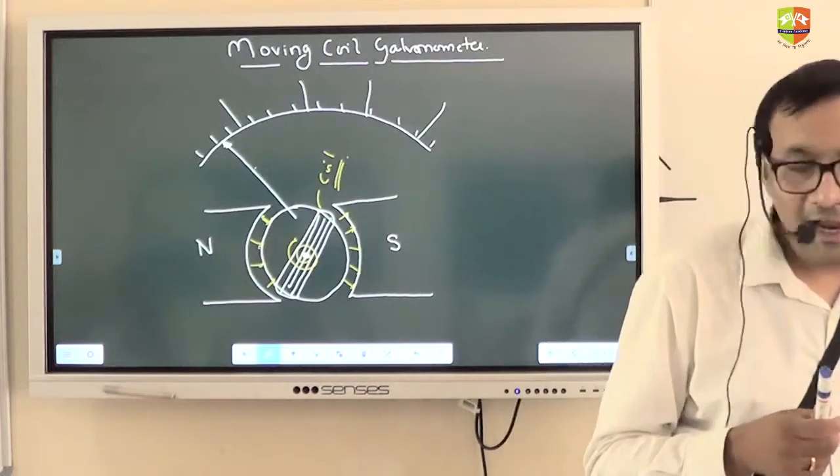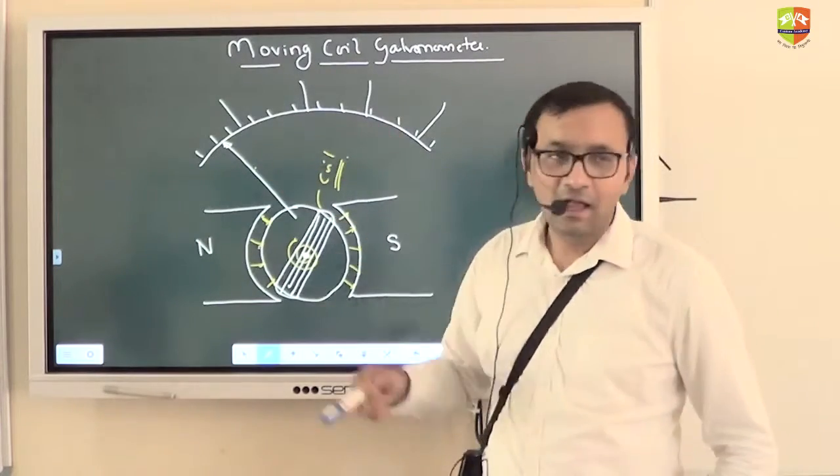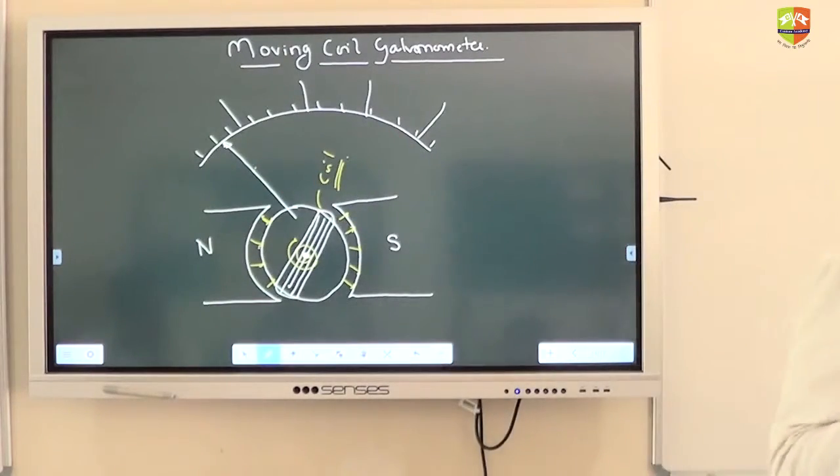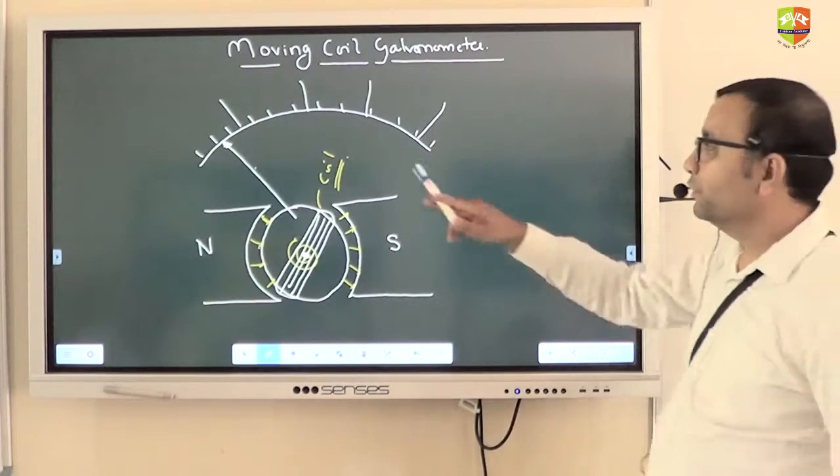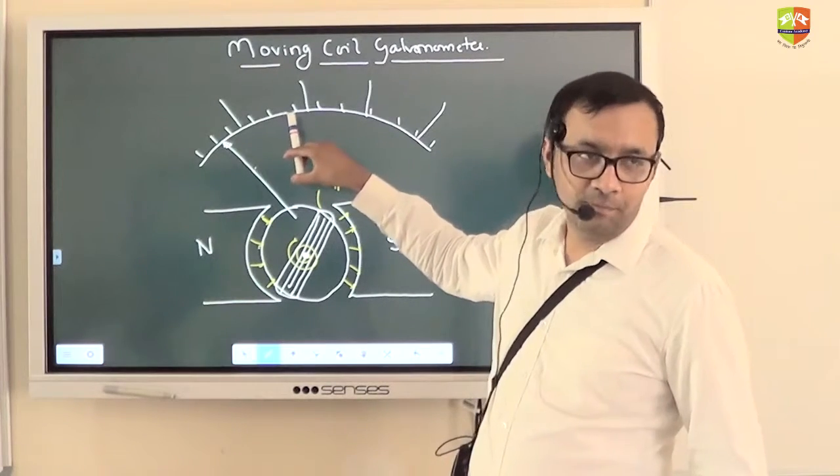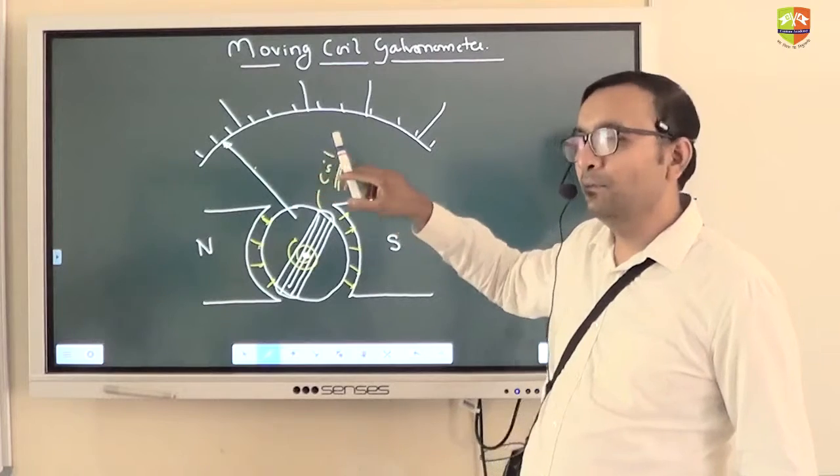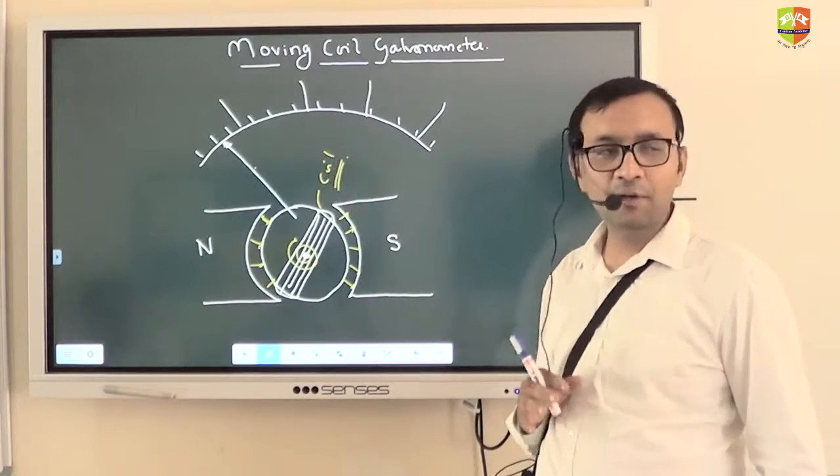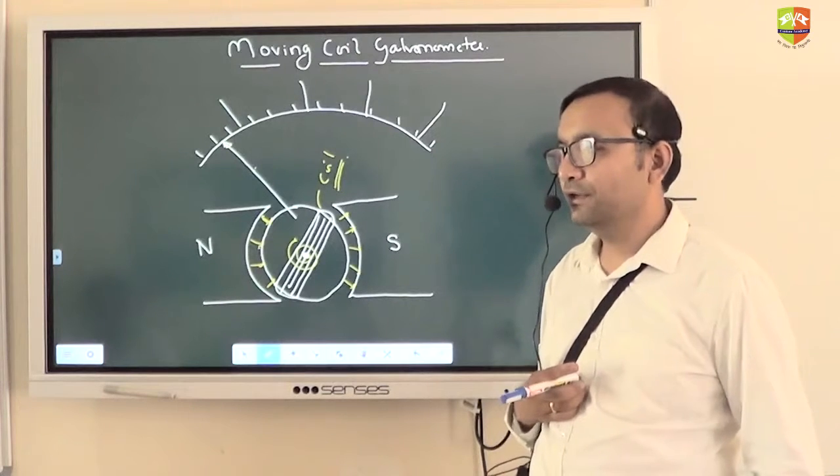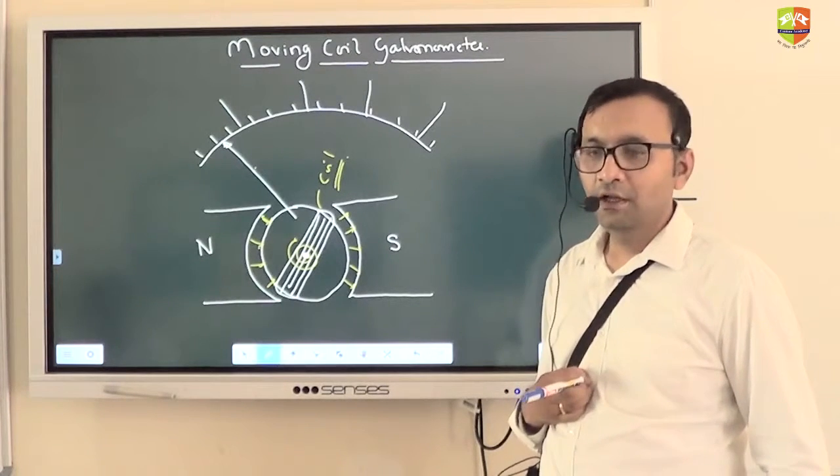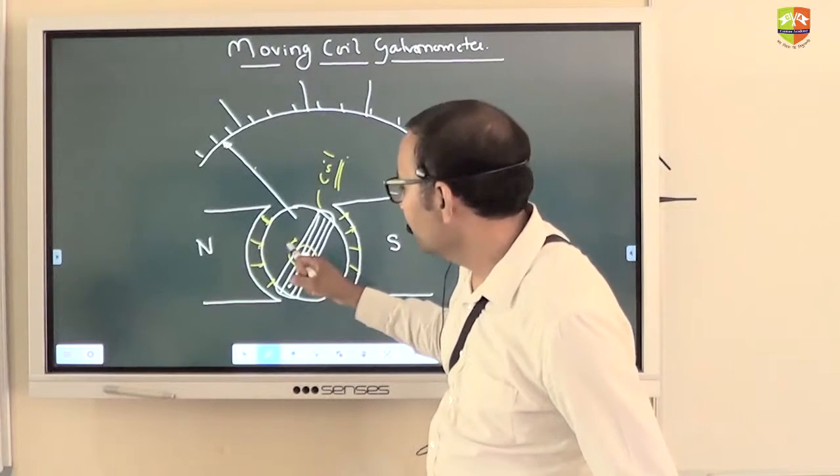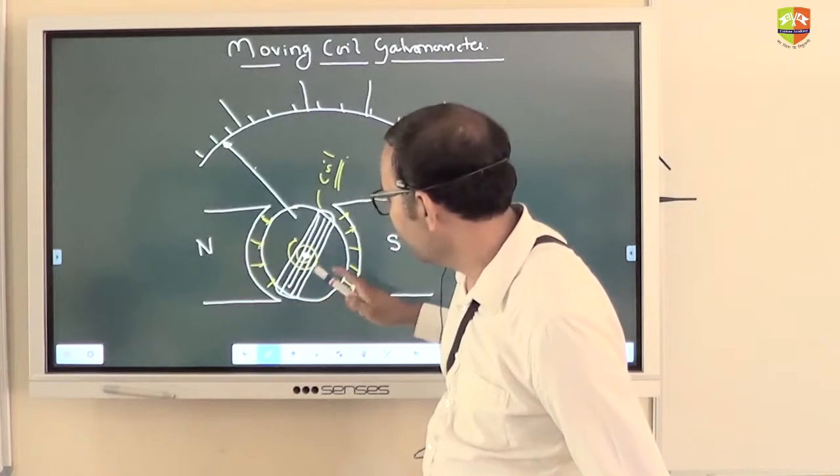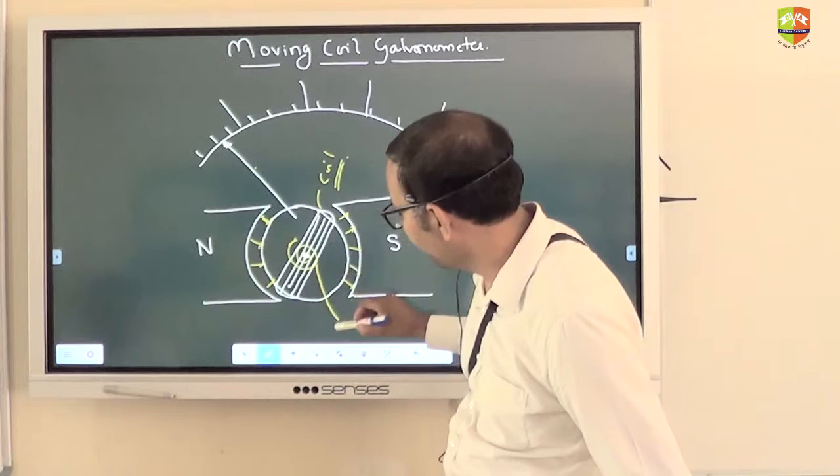Now I have a scale over here. Ideally what should happen if I am applying lesser current, it should rotate little bit and stop. And more current, again it should rotate slightly more and stop. Then only properly I will be able to measure the current. So in order to do that I have a torsional spring connected over here. This is a torsional spring.